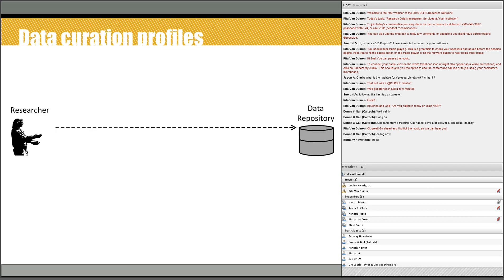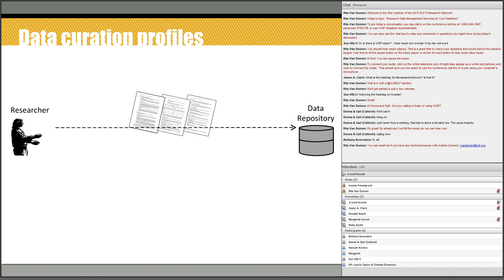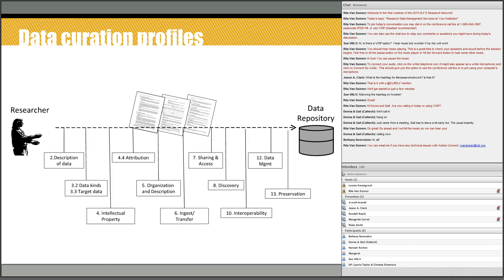The data curation profiles work was really our entry into learning about what researchers do and what it would take to share data. The subtitle of the project was 'Who's Willing to Share What with Whom and When.' The profiles helped us figure out what it would take to develop requirements or meet researcher needs in order to share data. Throughout the profiling process, we learned the kinds of questions to ask and tried to come up with solutions for them to deposit their data.